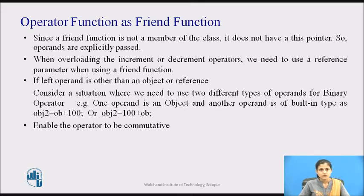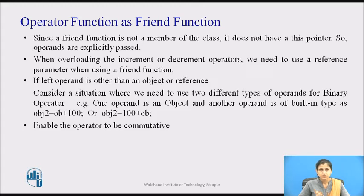As we know, when we overload a binary operator by using a member function, the object on the left side of the operator generates the call to the operator function, and a pointer to that object is passed as the this pointer. Now assume a class called cl that defines a member operator+ function that adds an object of the class to an integer. Given an object called ob, the expression ob + 100 is valid. In this case, ob generates the call to the overloaded plus function and the addition is performed.